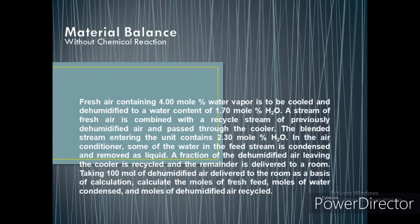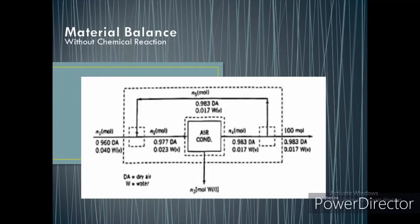Good day everyone. In this problem we will be solving material balance without chemical reaction in the DWSIM software. Fresh air containing 4 mole percent water vapor is to be cooled and dehumidified to a water content of 1.70 mole percent water. A stream of fresh air is combined with a recycled stream of previously dehumidified air and passed through the cooler. The blended stream entering the unit contains 2.30 mole percent water. In the air conditioner, some of the water in the feed stream is condensed and removed as liquid. A fraction of the dehumidified air leaving the cooler is recycled and the remainder is delivered to a room. Taking 100 moles of dehumidified air delivered to the room as basis, calculate the moles of fresh feed, moles of water condensed, and moles of dehumidified air recycled.